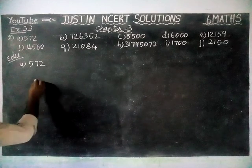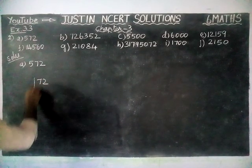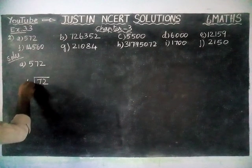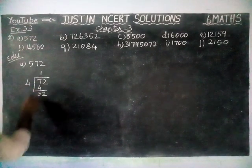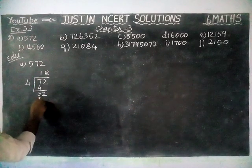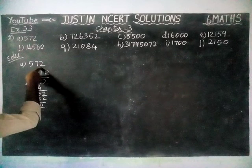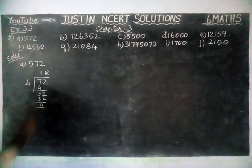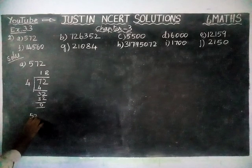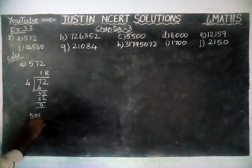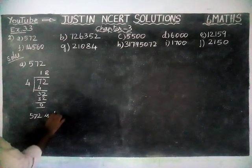Now we are going to check divisibility by 4 for the number 572. The last 2 digits are 72. Dividing 72 by 4: 8 fours are 32, remainder 0. Therefore 572 is divisible by 4.